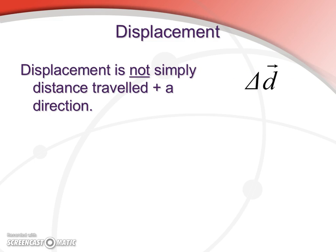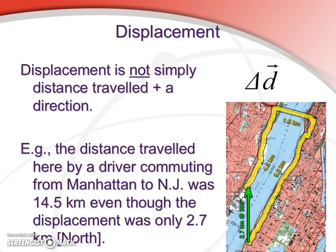So if we want to talk about displacement, it's not simply the distance we travel plus a direction — it's simpler than that in many ways. Here's a classic example: a commuter followed the yellow path going home from Manhattan, moved along the river for 8.2 kilometers to the bridge, took the bridge across 1.8 kilometers, then drove back along the river 4.5 kilometers to his home. When he's finished, he's driven 14.5 kilometers, but his displacement is just 2.7 kilometers north. So there's lots of distance traveled, but a pretty short displacement — the result was relatively small. This is the important distinction.